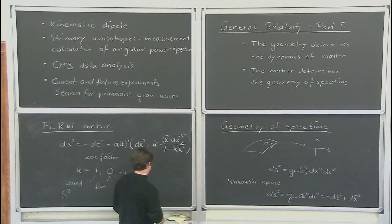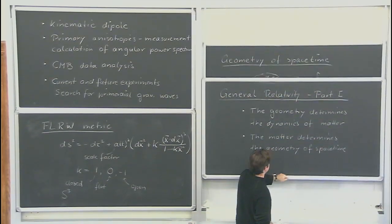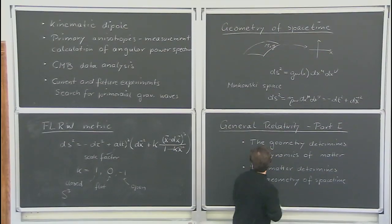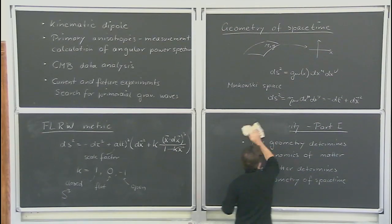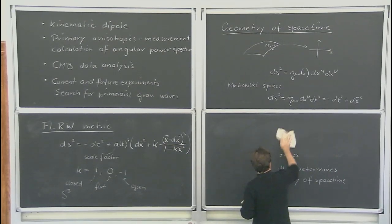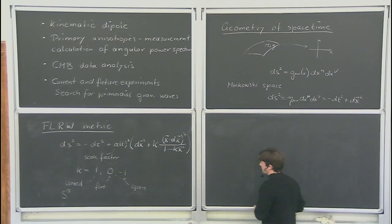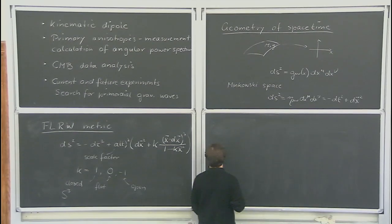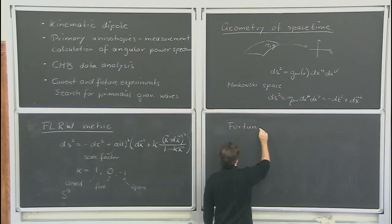All the data is consistent with the simplest version, k = 0, which means life is relatively simple. Obviously if you want to constrain the curvature you have to include it, but for most of what I'll be discussing I'll work with the flat FRW universe.